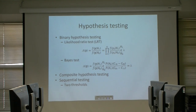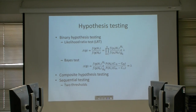In composite hypothesis testing, lambda one indicates the presence of the primary user and improves the result of the sensing.